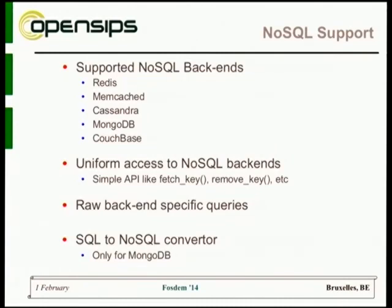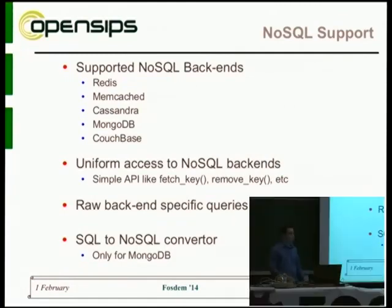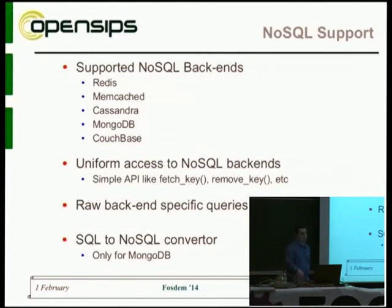In VoIP we deal a lot with counters: how much credit do you have, how many ongoing calls do you have — those are counters. We expose those through this uniform access API. So what you have now is the ability to write your scripts in one single way, no matter what engine you are using — whether it's Memcached, Cassandra, MongoDB, and so on.